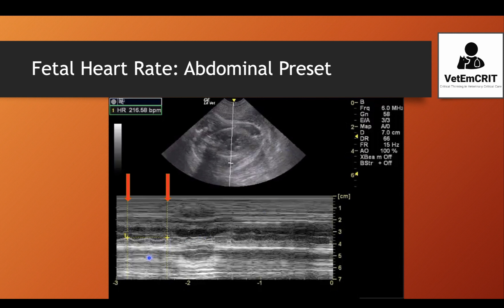You freeze the image in M-mode and will see the M-mode in a still image. Instead of choosing one cardiac cycle, you will need to choose two cardiac cycles. So this is systole of cardiac cycle number one — skip the next systole and choose the second systole, so your caliper will span two full cardiac cycles. As soon as you confirm the position of your second caliper, you will get the fetal heart rate, which in this case is around 216 beats per minute — pretty normal for a canine fetus.